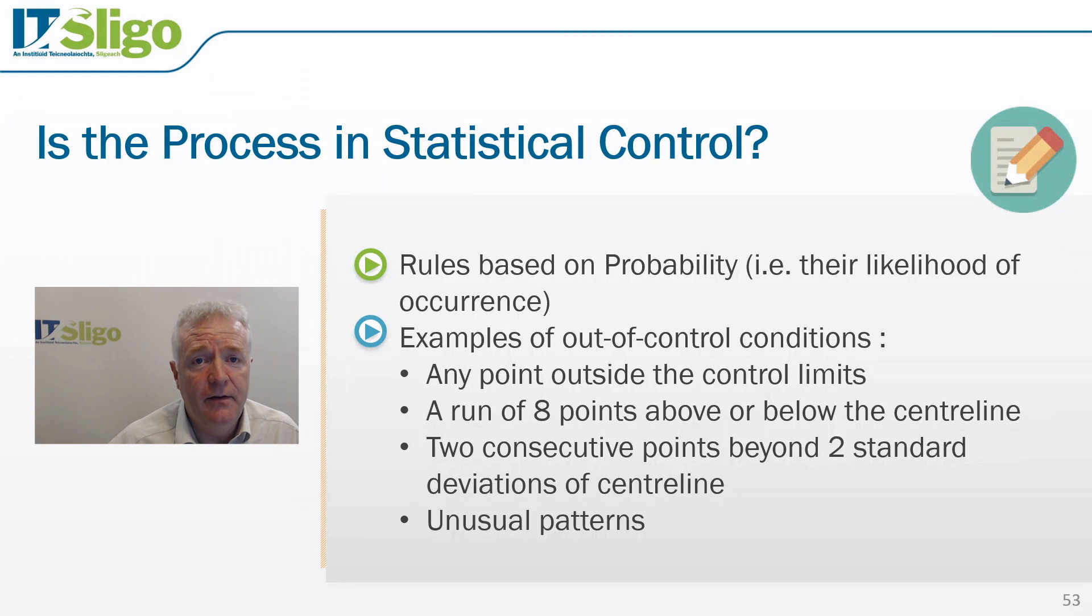The rules for assessing whether the process is in statistical control are based on probabilities associated with the normal distribution. Some examples of out of control conditions are if any point falls outside the upper or lower control limit, if we have a run of 8 points above or below the centreline, or if we have two consecutive points beyond two standard deviations of the centreline. In addition, the process is considered out of control if we have any unusual patterns inconsistent with the normal distribution.